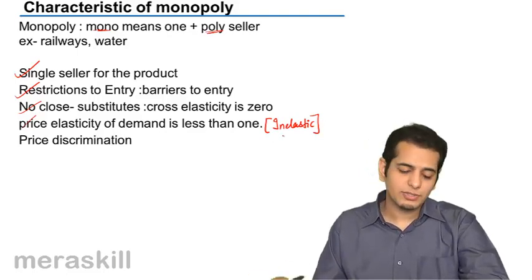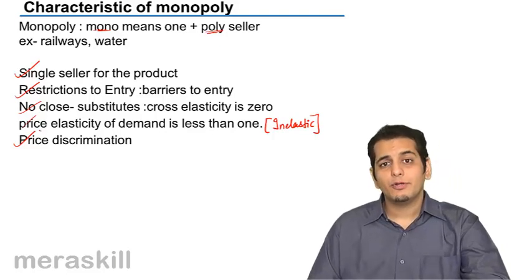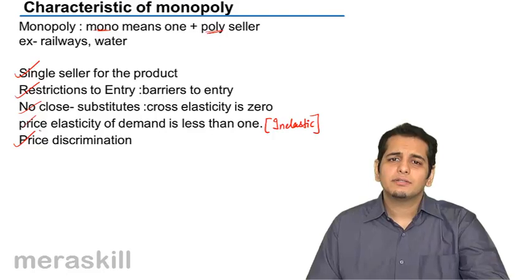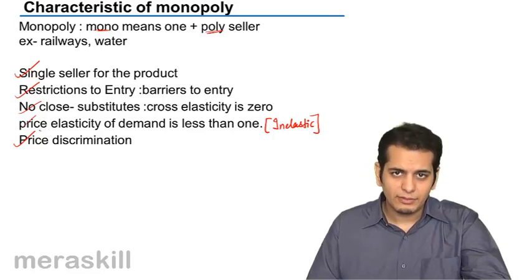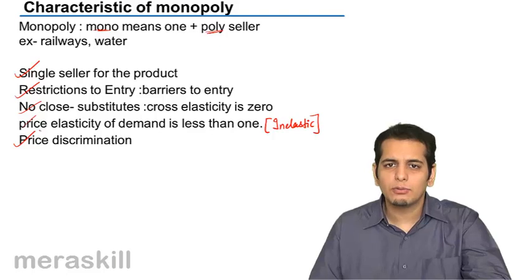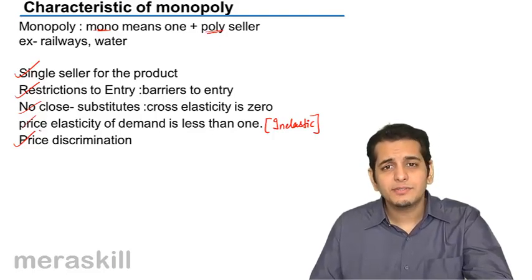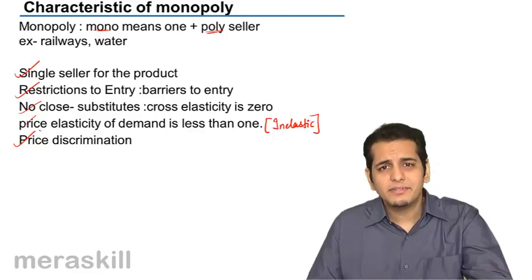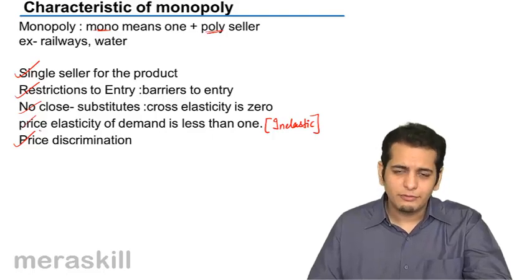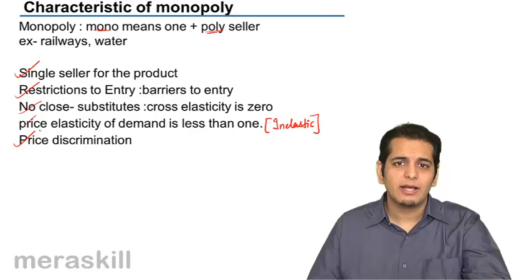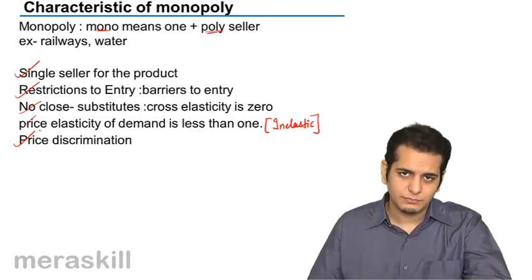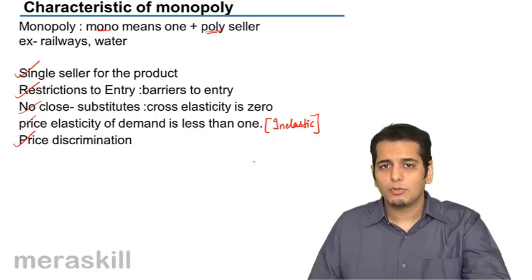Next is price discrimination. In a monopoly market, because there is only one seller, he is the king. He may choose to sell the product at a higher price to person A, and at the same time choose to sell it at a lower price to person B. He makes the price. He can discriminate because he is the single seller — if he chooses to sell at a higher price, you still have to purchase from him; if he chooses a lower price, you still have to purchase from him. So he has the power to discriminate as far as prices are concerned. These are the characteristics of a monopoly market.